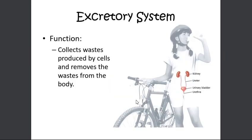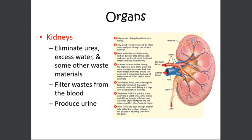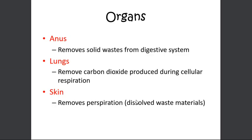The excretory system collects waste produced by cells and removes it from the body. Its parts include the kidneys, anus, lungs, and skin. All of these help our bodies remove toxic waste.